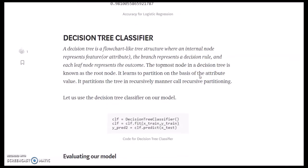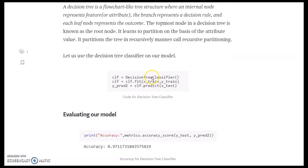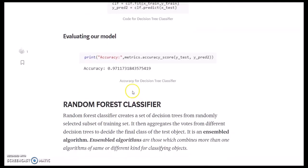Decision tree classifier. A decision tree is a flowchart-like tree structure where an internal node represents a feature, the branch represents the decision rule, and each leaf node represents the outcome. Decision tree classifier is used here and the predicted outcome is via predict two. Evaluating the accuracy is 0.97, which is very good.